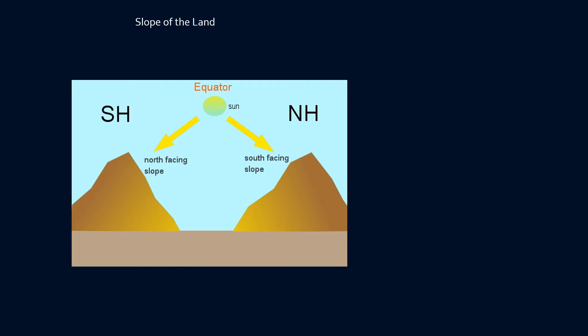Mountain ranges which have an east-west alignment play a very important role in influencing the temperature of a place, especially in the middle latitudes. Here in this slide you can see there are two mountain features — one in the northern hemisphere, one in the southern hemisphere. In the northern hemisphere, the south-facing slopes have more direct rays of the sun, so they are at a higher temperature, whereas the north-facing slopes have a lower temperature because they are sheltered and receive slanting rays.